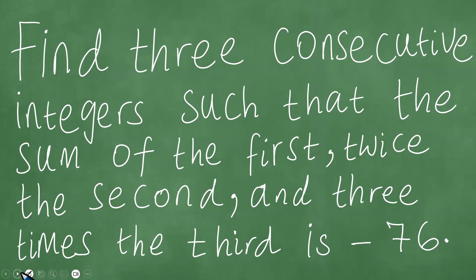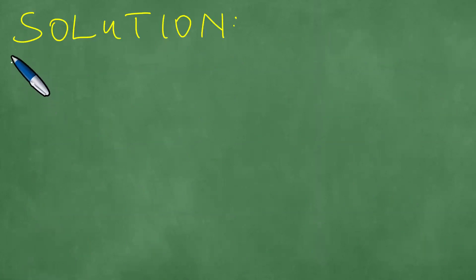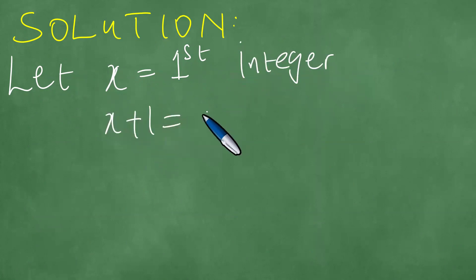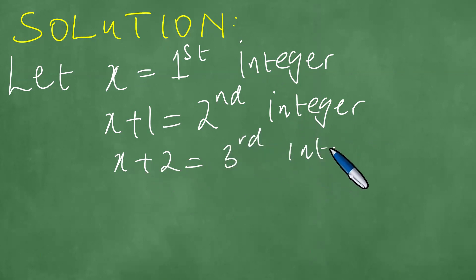So how do we solve this problem? Let's proceed step by step. We let x be equal to the first integer. Because they're consecutive, the next one is x plus one, which is the second integer, and then x plus two becomes the third integer.